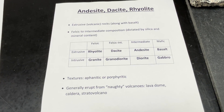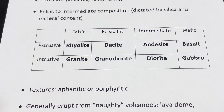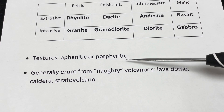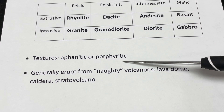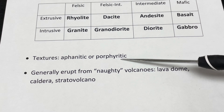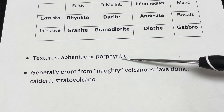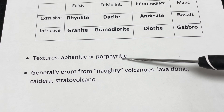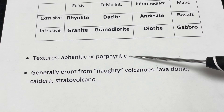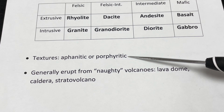Textures in andesites, dacites, and rhyolites tend to be aphanitic or porphyritic. We're going to see a lot of porphyritic rocks today. Porphyritic means the magma started cooling slowly underground, forming big crystals, but then erupted from a volcano. Those large crystals were carried up with the magma, and everything around them cooled very quickly to form tiny crystals — that's why we see the disparity in crystal sizes.